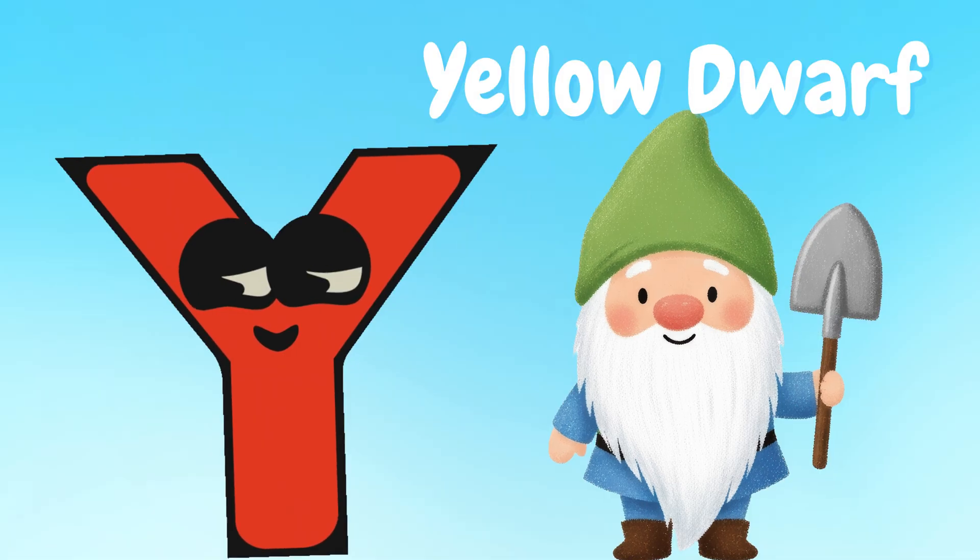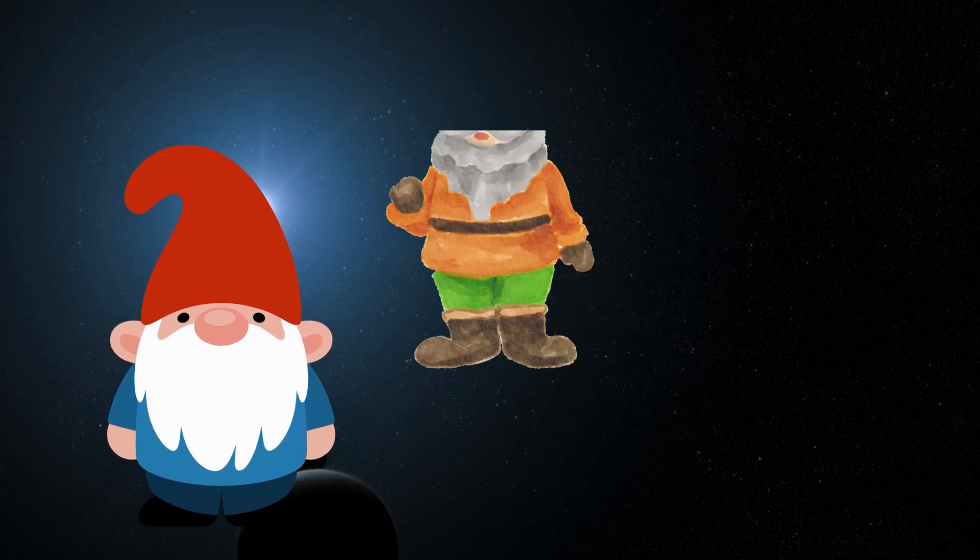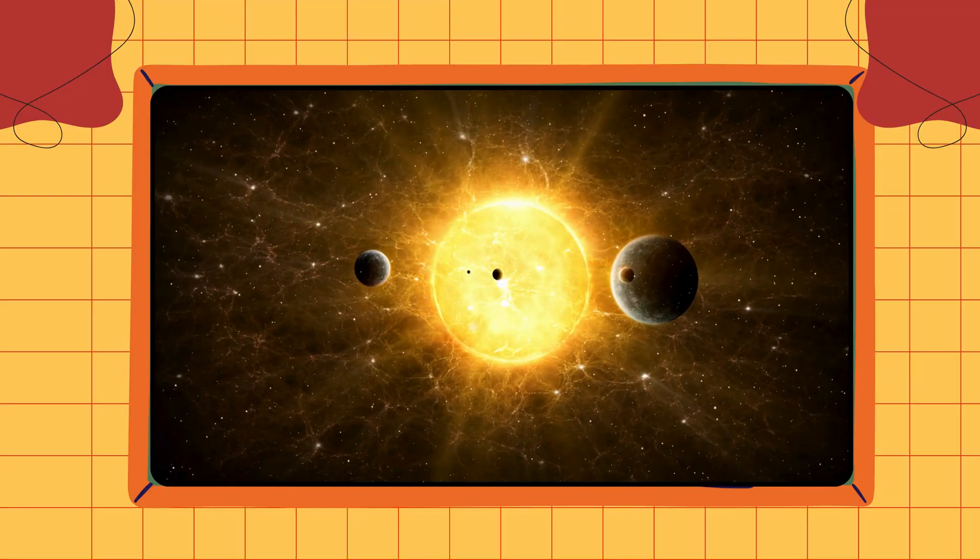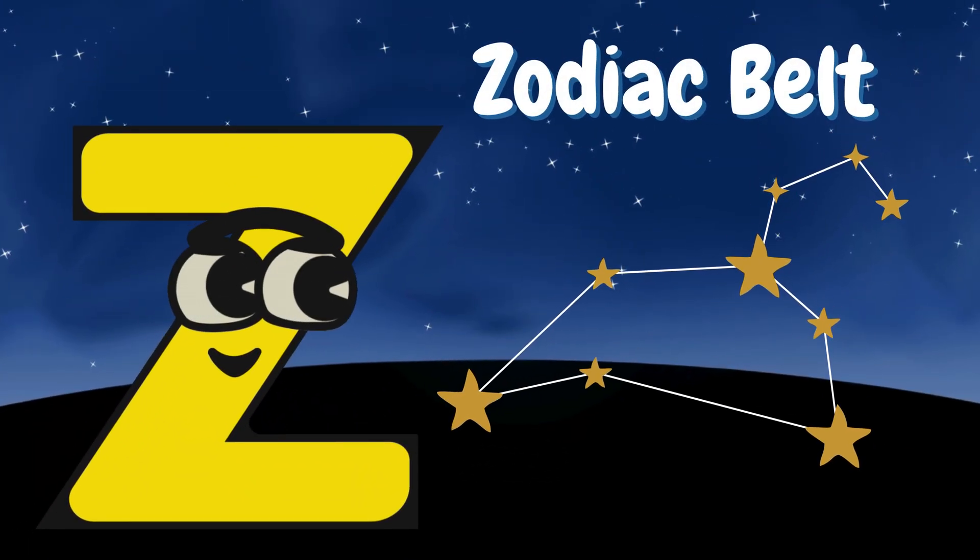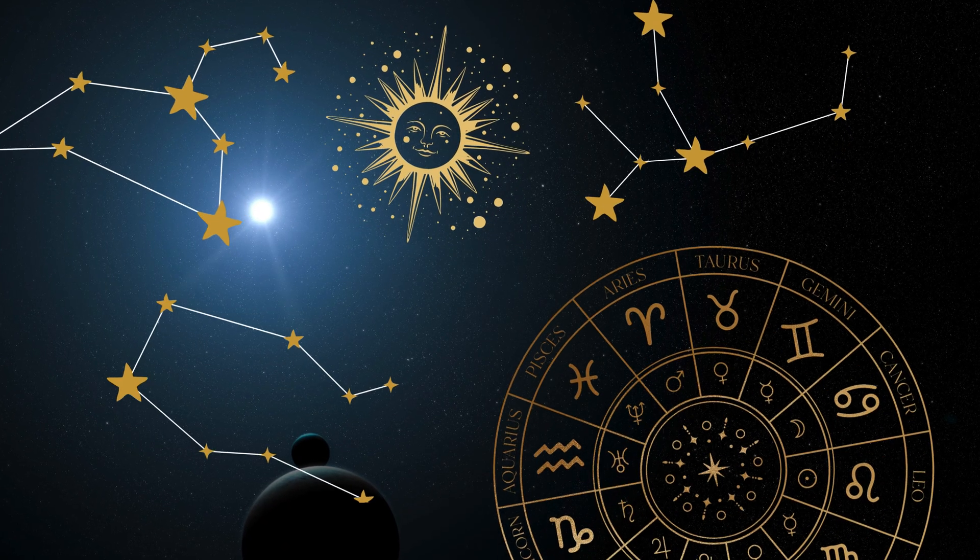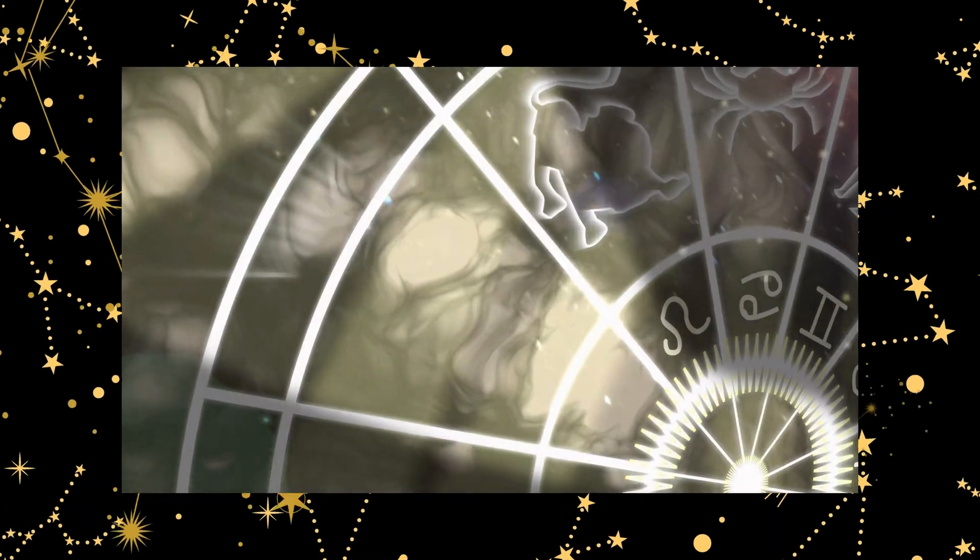Y is for yellow dwarf. Our sun is a happy yellow dwarf star. Z is for zodiac belt. The zodiac belt is where stars make our constellations.